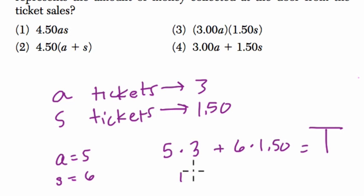So 5 times 3 would be 15, 6 times $1.50 would be 9, and we would make $24.